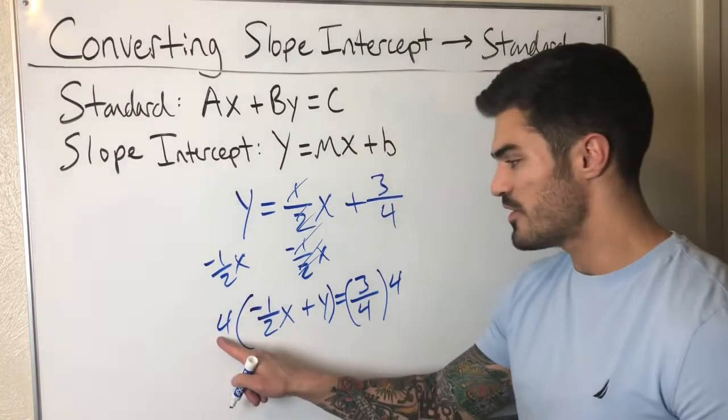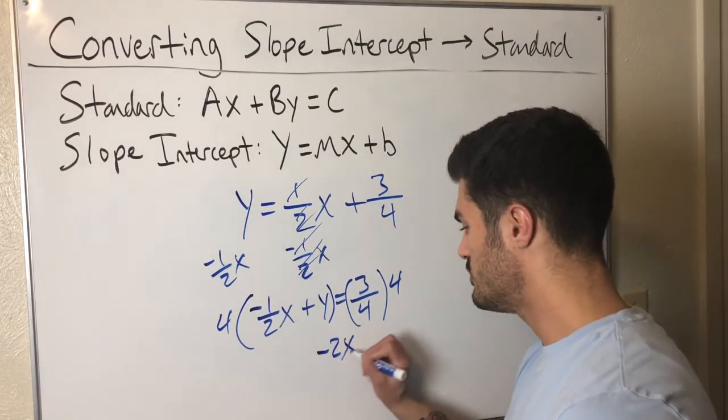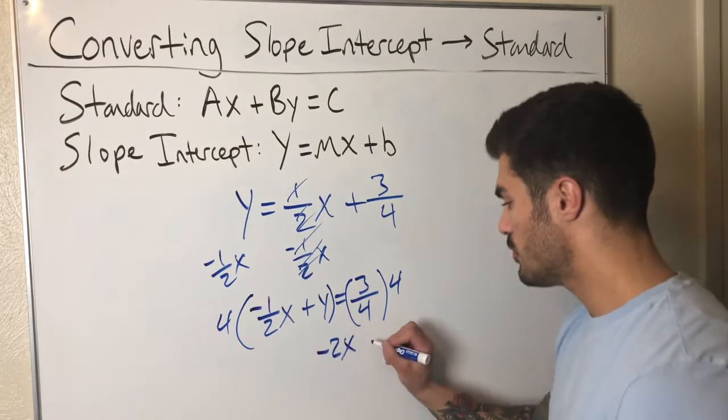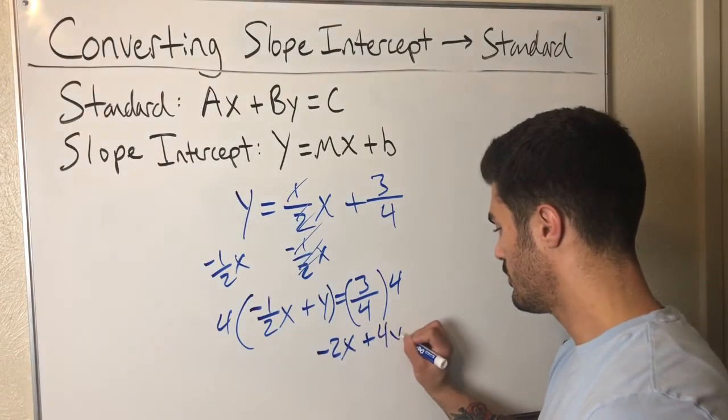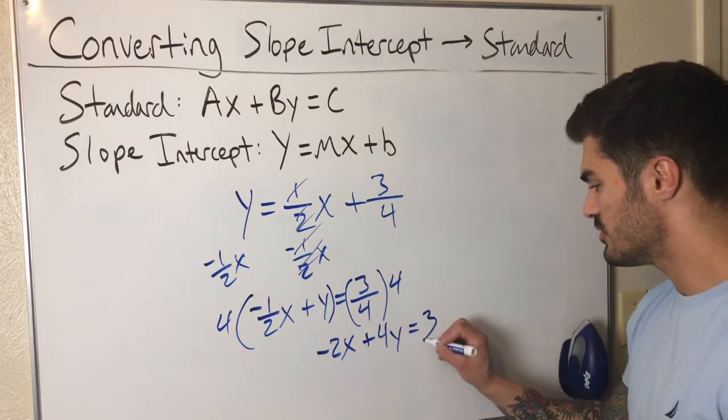Four, four. So my four times negative one half, that's negative two. I have negative two x plus four y equals three fourths times four. The fours cancel equals three.